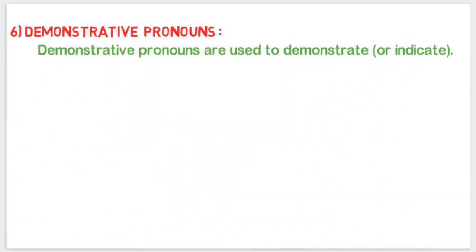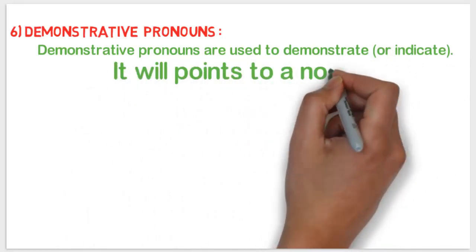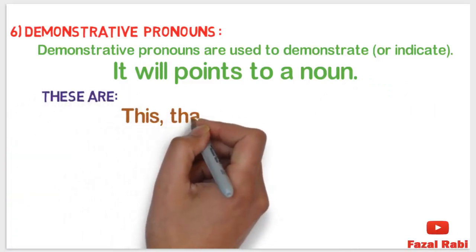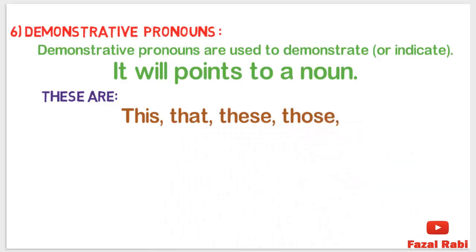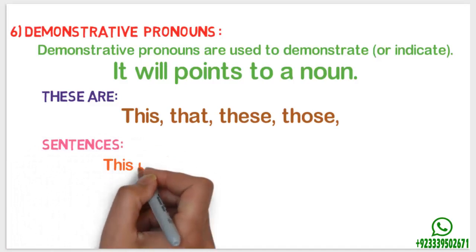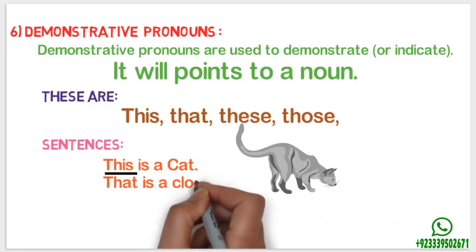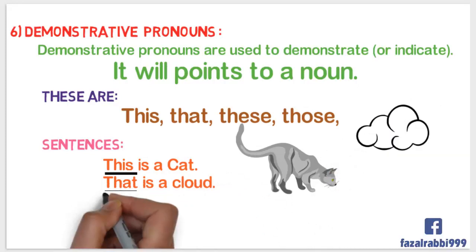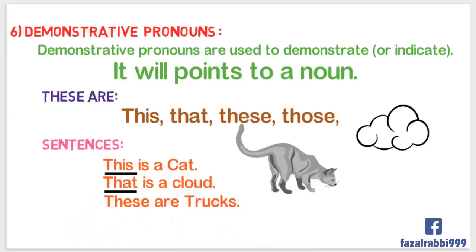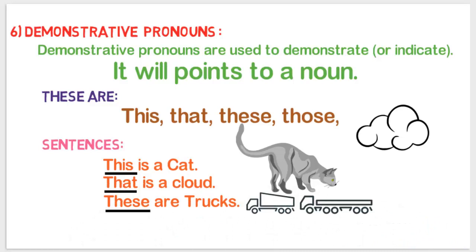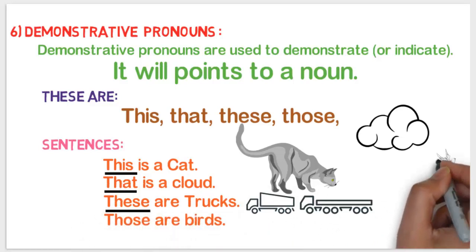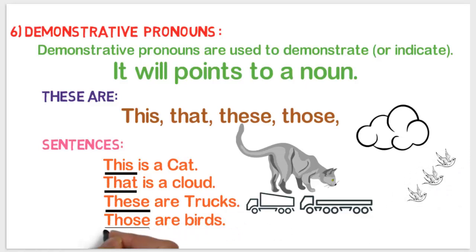Number six: demonstrative pronouns. Demonstrative pronouns are used to demonstrate or indicate — they point to a noun. These are: this, that, these, those. For example: 'This is a cat' — this is a demonstrative pronoun. 'That is a cloud' — that is a demonstrative pronoun. 'These are trucks' — these is a demonstrative pronoun. 'Those are birds' — those is a demonstrative pronoun. Note that this and these are used for things which are near, and that and those are used for things which are far away.